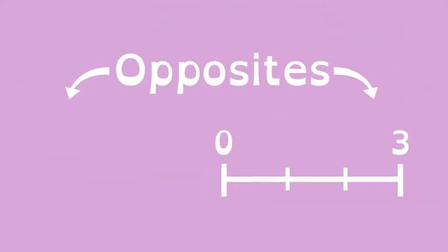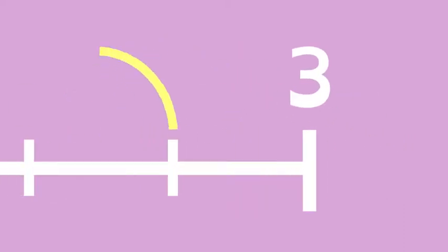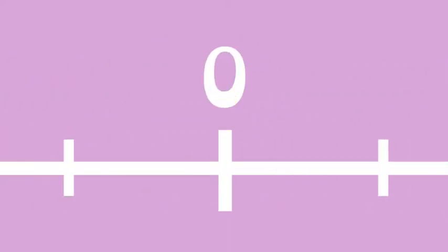For example, positive 3 on the right of the number line has an additive inverse of negative 3 on the left of the number line. So 3 is 1, 2, 3 spaces right of zero. Likewise, the additive inverse negative 3 is 1, 2, 3 spaces left of zero.